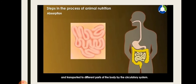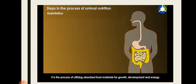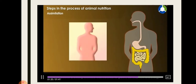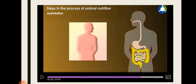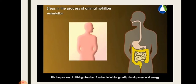The next step after absorption is assimilation. Now the blood has all the nutrients. The process by which all the activities are performed using the nutrients absorbed by the blood is known as assimilation. The nutrients supply energy to all body parts, helping us perform different activities such as growth, physical work, and repair or maintenance of the body.